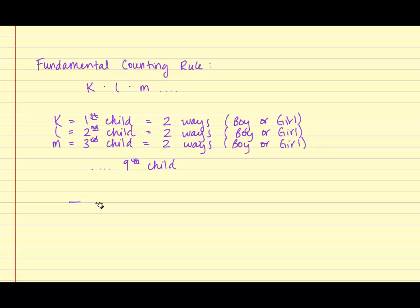Thus, we'll have nine spaces to represent the nine different options. And again, we're using the Fundamental Counting Rule, so we're multiplying each possibility.